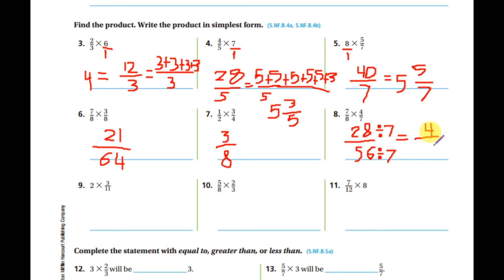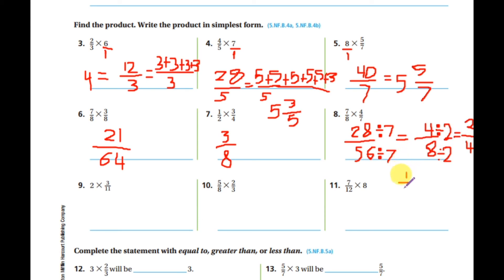Eight over four is not the simplest form yet because both are even numbers. Divide by two: four divided by two is two, and eight divided by two is four. Still need to simplify — divide by two again: one over two. This is the simplest form. The fraction three over eight from earlier couldn't be simplified because three is a prime number and eight cannot be divided by three.